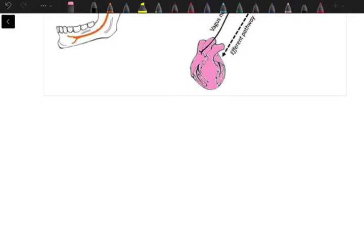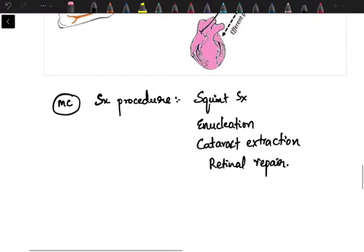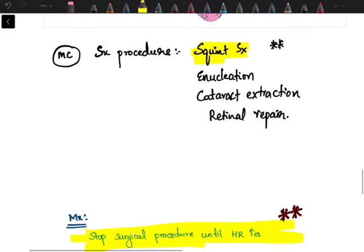This reflex is most commonly seen during surgical procedures, mainly during pediatric age group in squint surgery. We can also see it during enucleation procedures, cataract extractions, or retinal repairs. During all these surgical procedures, we give pressure over the globe or traction over the extraocular muscles. The most important to remember is squint surgery.